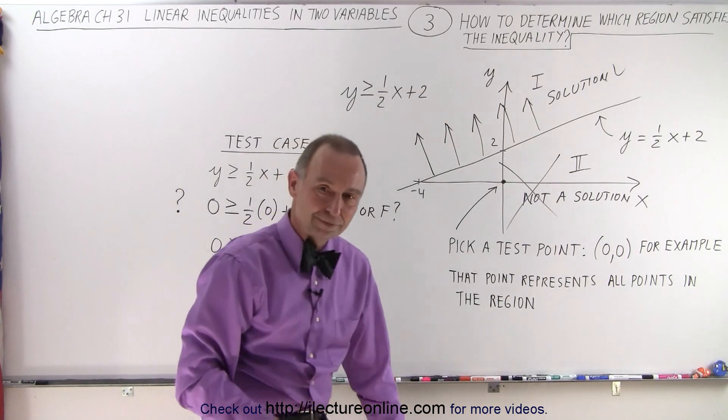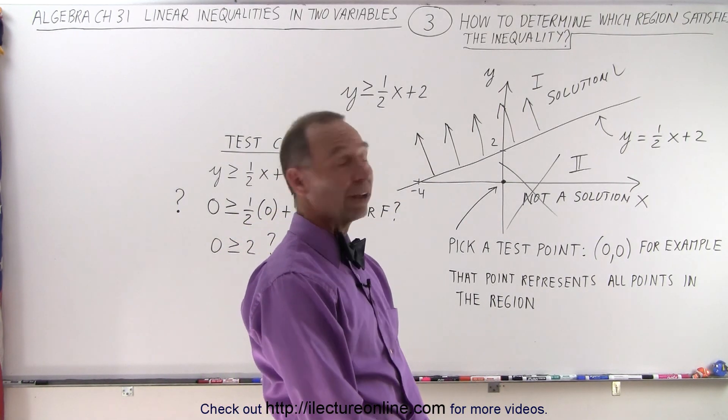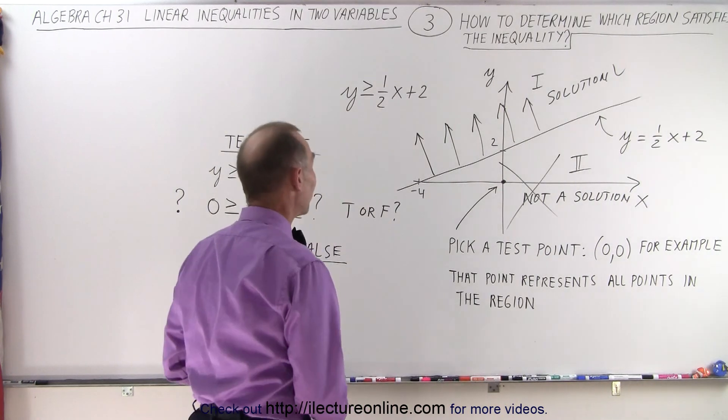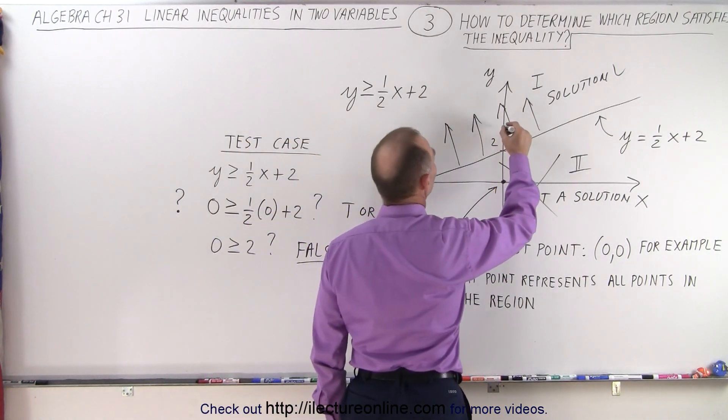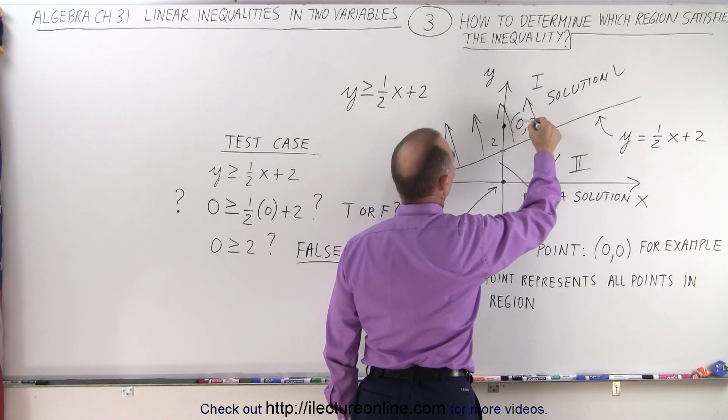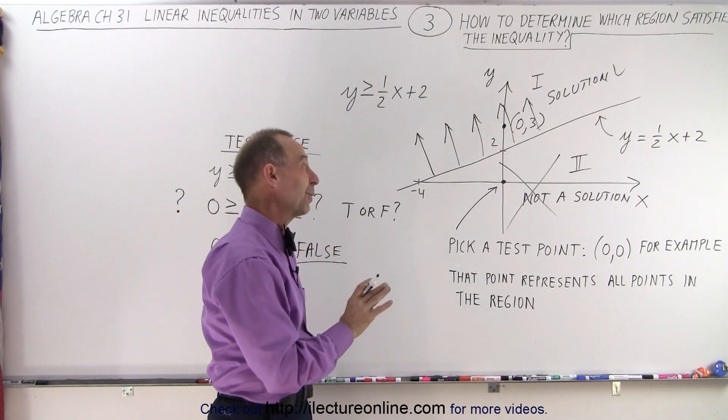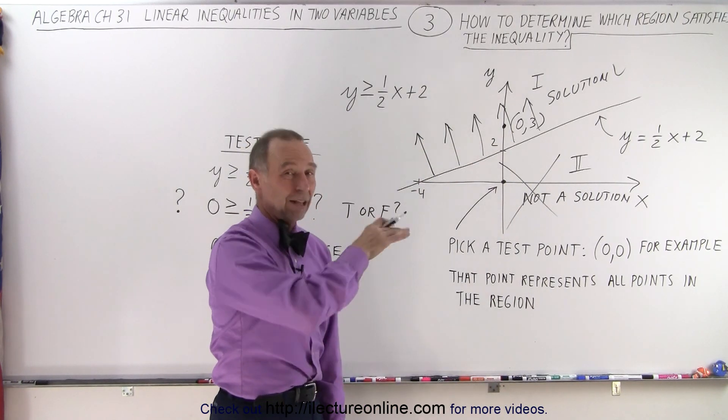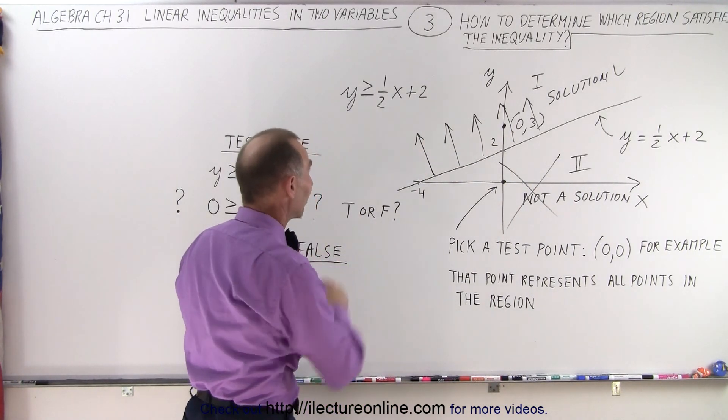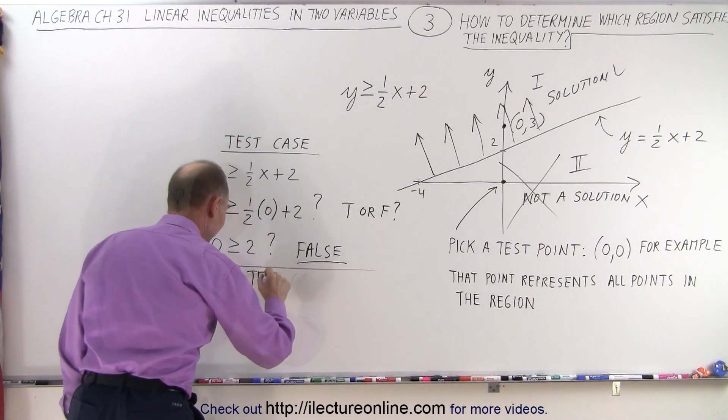You don't need to pick one in the other region just to make sure, but I guess we could do that. Let's pick another point. Let's pick the point (0,3), I should say 0,3 - x is 0, y is 3. Now we pick a point in the other region. We already know that region satisfies the inequality, but let's do another test case, a second test case.